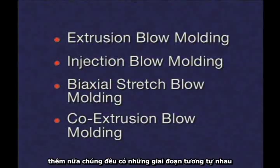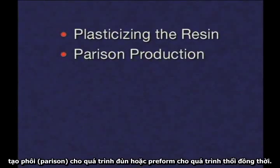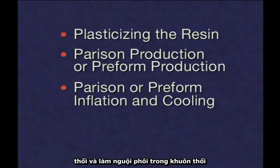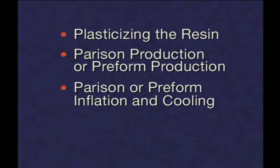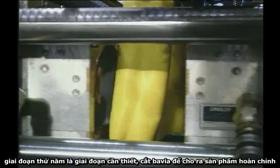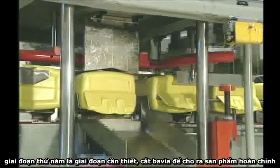These blow molding processes all share four common stages: plasticizing or melting the resin; parison production when referring to most blow molding operations, or preform production when referring to biaxial stretch blow molding; parison or preform inflation and cooling in the blow mold; and ejection from the blow mold. A fifth stage is necessary in extrusion blow molding for trimming and finishing the product.